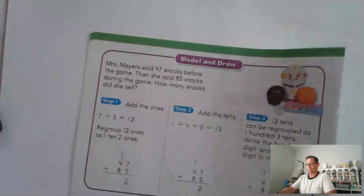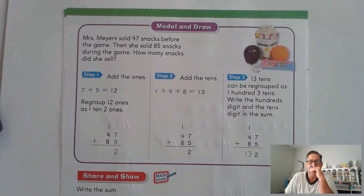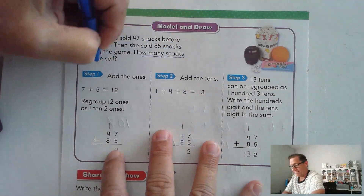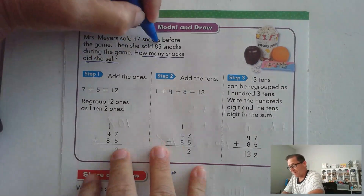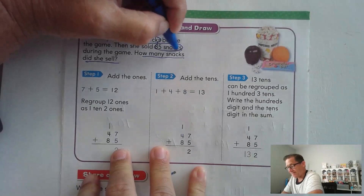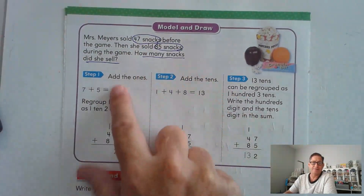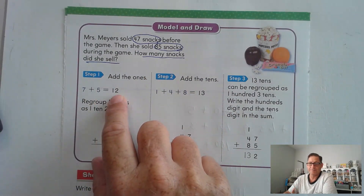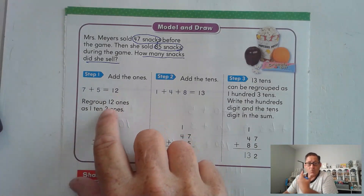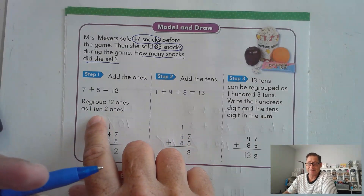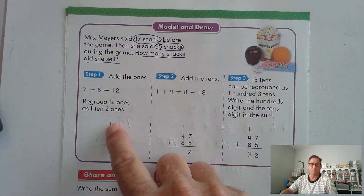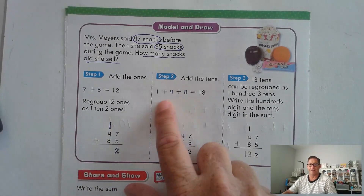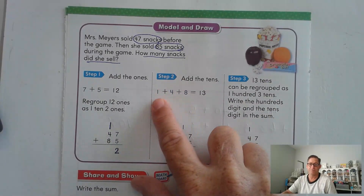Page 198. Mrs. Meyer sold 47 snacks before the game, then she sold 85 snacks during the game. How many snacks did she sell? We want to underline the question to make sure we know what we're answering. We need to know how many snacks she sold in all. Step one, add the ones: seven and five is 12 ones. We have to regroup — 10 of the 12 ones as a ten and two ones. Now add the tens: eight and four is 12, plus the regrouped ten gives us 13 tens. 13 tens can be regrouped as 100 and three tens.